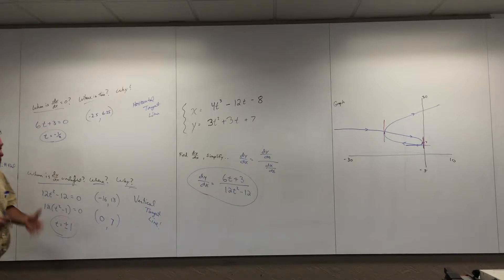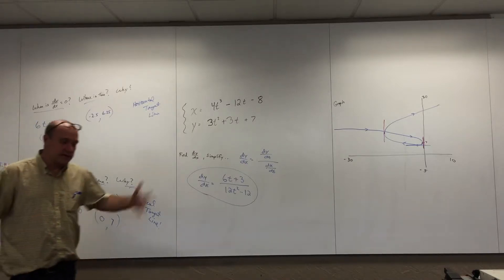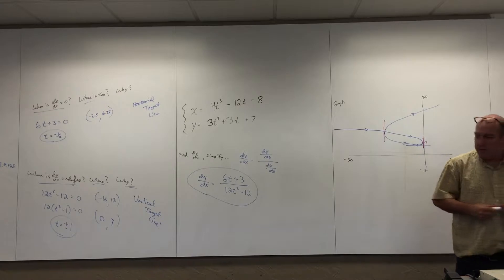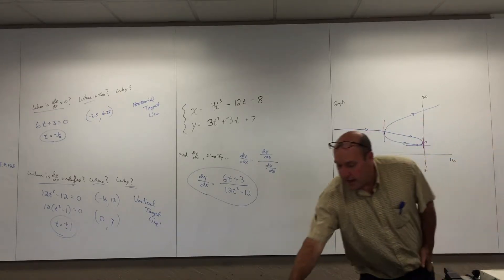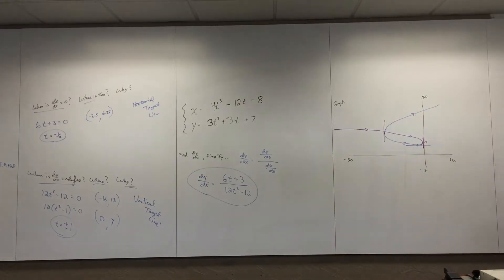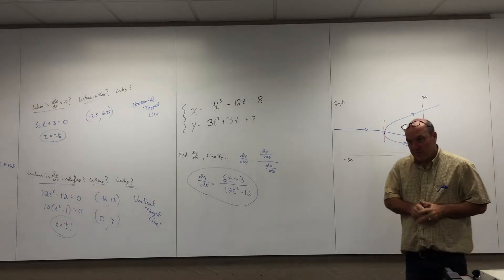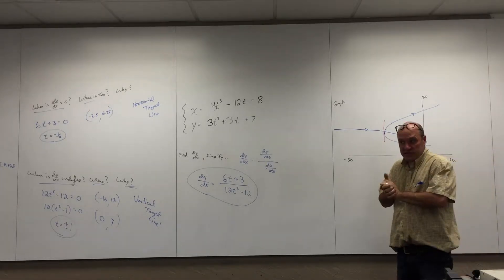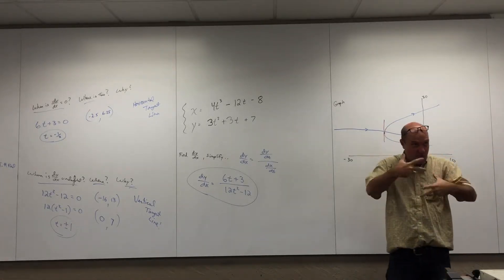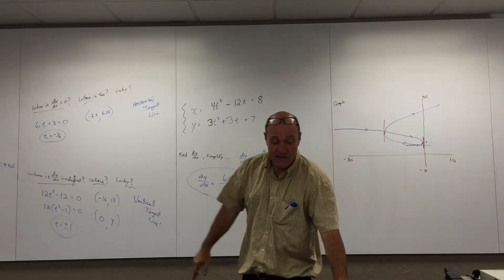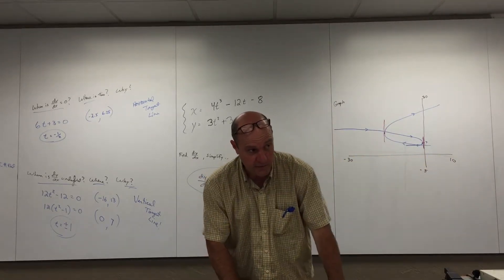Analyzing the derivative, doing this algebra, leads to those important places on the graph. Why is the derivative undefined there? Vertical tangent line. So that's good stuff. We had done one like this Friday. Any other questions from 10-1, 10-2, 10-3? Yes — 10-2 number 19.